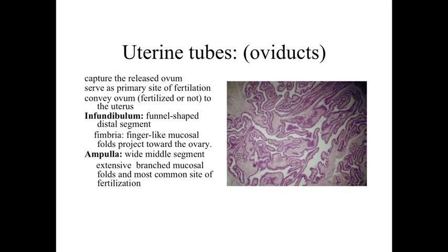Once the egg is released, it's going to be transported through the oviducts — the structure between the ovary and the uterus. The oviducts capture the released ova and transport it down to the uterus over an extended period of time. It's within the uterine tubes where the ovum is going to be fertilized, so the egg and sperm come together within the oviducts.